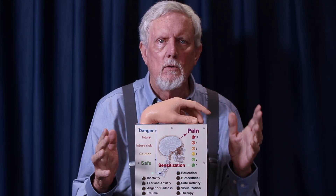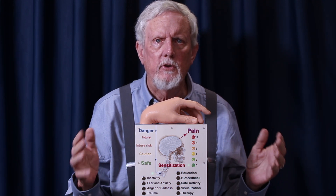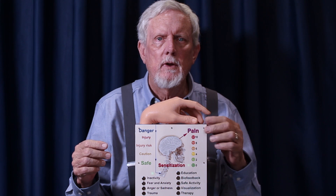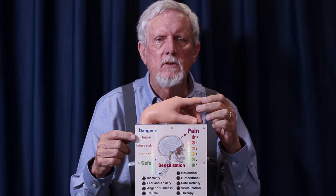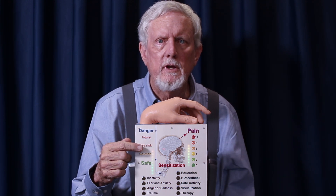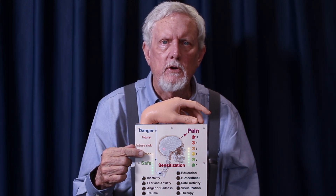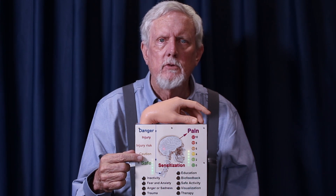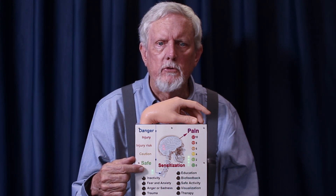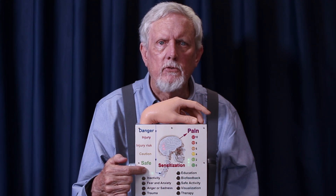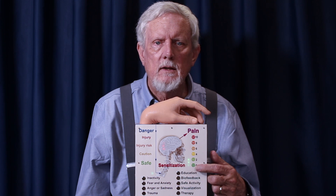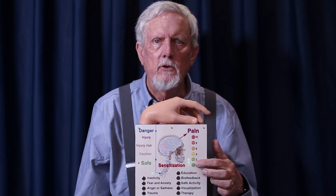But what happens if there's a serious injury? Large signals from damaged tissue are processed by the brain to create intense pain. Then, as the injury heals, signals decrease slowly, gradually — sometimes over days, weeks, even months. But notice: even after the injury has fully healed and there are only small, safe signals, the pain level doesn't necessarily return to zero.